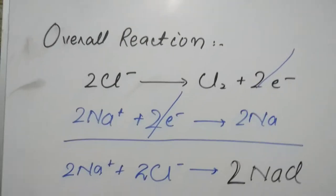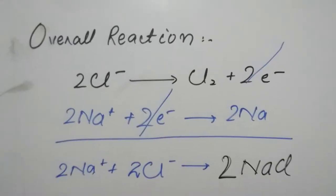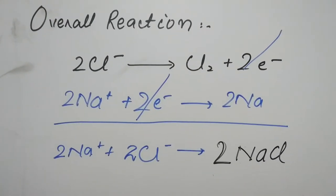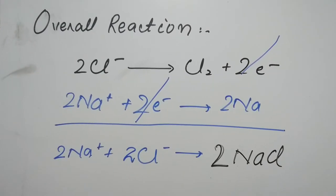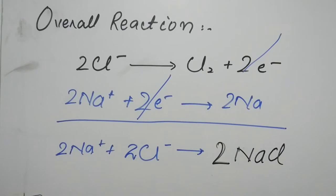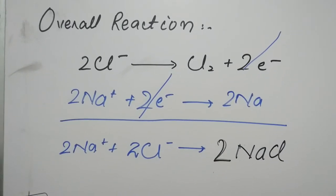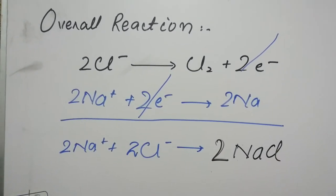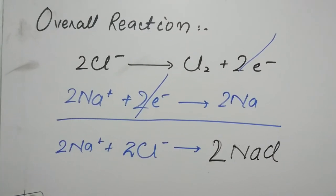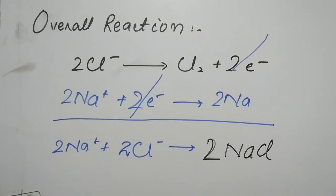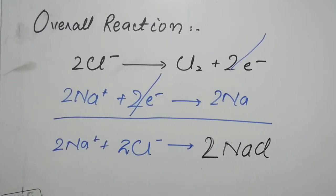Now for having the overall reaction of this process we can see clearly that chlorine ions lose their electrons while the sodium ions get the electrons to form sodium metal. Simplifying it we get a compound which is balanced NaCl, which is known as sodium chloride.